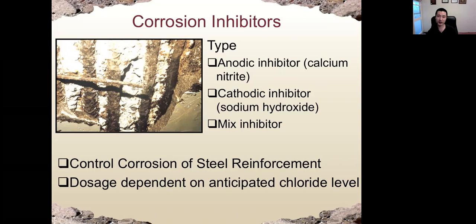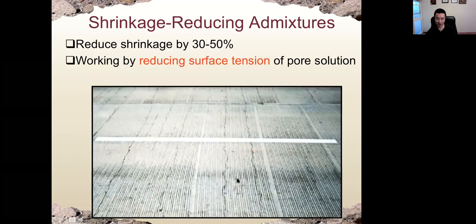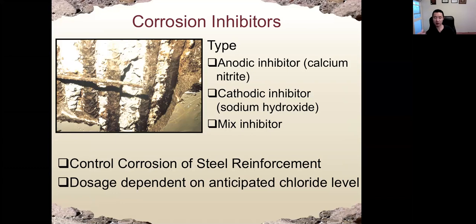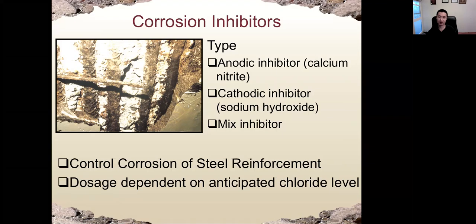We also have corrosion inhibitors. By name, corrosion inhibitors reduce the potential for corrosion. There are different types: anodic inhibitors, cathodic inhibitors, or mixed types. We will discuss corrosion of reinforcement in more detail in future lectures, but today just remember we have chemical admixtures that can help concrete reduce the corrosion of reinforcement.